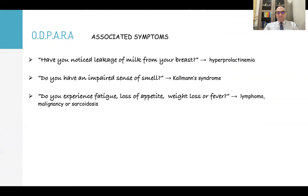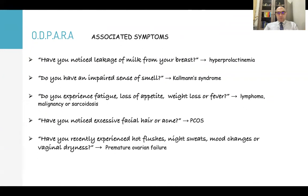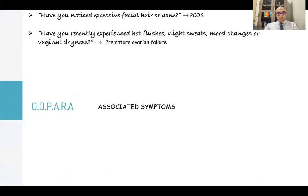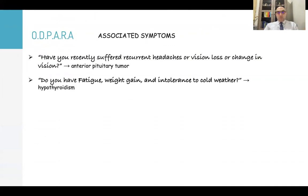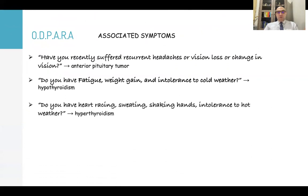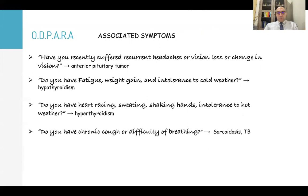Continue associated symptoms: 'Do you experience fatigue, loss of appetite, weight loss, or fever?' — as in lymphoma, malignancy, or sarcoidosis. 'Have you noticed excessive facial hair or acne?' — polycystic ovary syndrome. 'Have you recently experienced hot flushes, night sweats, mood changes, and vaginal dryness?' — premature ovarian failure if before age of 40. 'Have you suffered recurrent headaches, visual loss, or change in vision?' — anterior pituitary tumors. 'Do you have fatigue, weight gain, and intolerance to cold weather?' — hypothyroidism. 'Do you have heart racing, sweating, shaking hands, and intolerance to hot weather?' — hyperthyroidism. 'Do you have a chronic cough or difficulty breathing?' — sarcoidosis and TB.